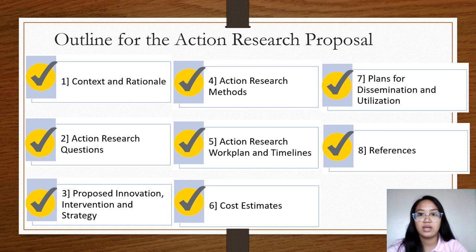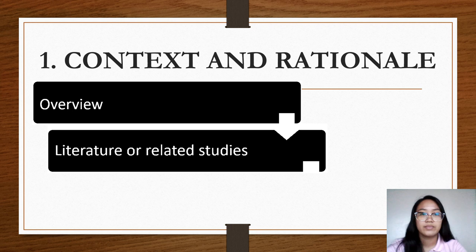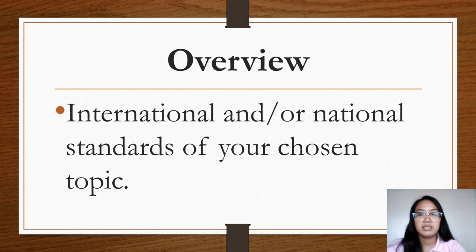Context and rationale has the following parts: overview, literature or related studies, and introduction to the main focus of the current study. For the overview, there must be 10 literature or studies according to the new standards released by the Region 5 PPRD, which must be interconnected with the responses to your research questions. Later on, following the I-PAIR strategy for the discussion of results, you will have to reflect and link between the literature and the results of your study.